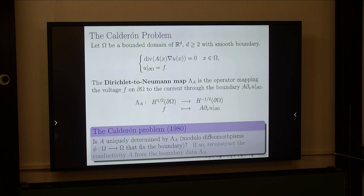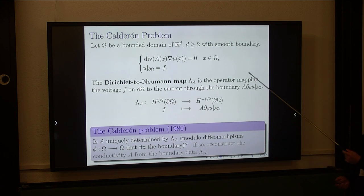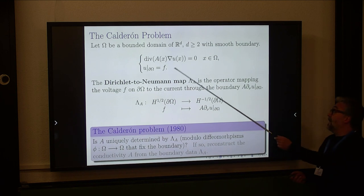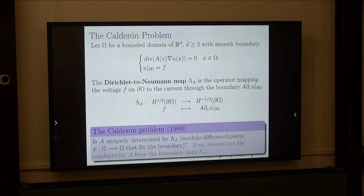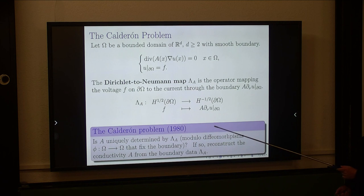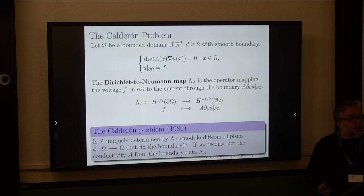There is a straightforward non-uniqueness in this problem, which comes from the fact that if you have a diffeomorphism of your domain omega that fixes the boundary and you push forward your metric A with this diffeomorphism, you get a different matrix A which has the same Dirichlet-to-Neumann operator. So there is a trivial non-uniqueness in the problem. The question by Calderón is: is this the only source of non-uniqueness, or are there other types?